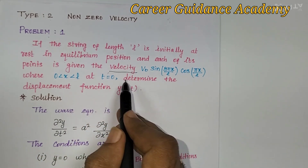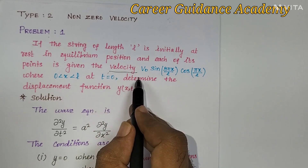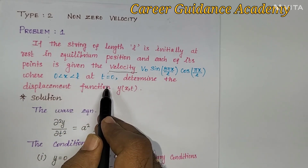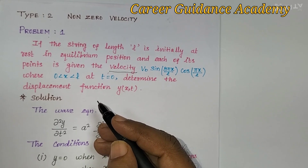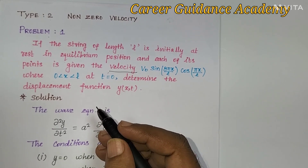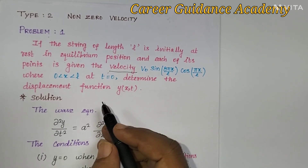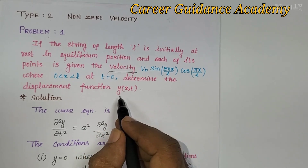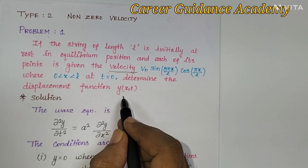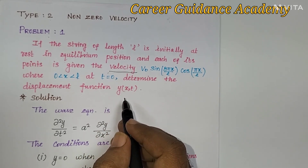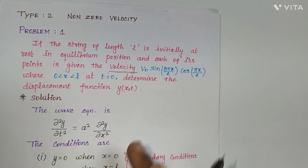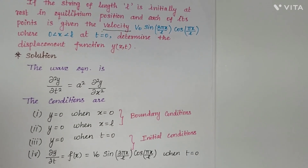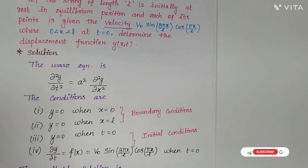In this problem, they have given velocity at a position along length 0 to L at time t = 0. We have to find the displacement function y(x, t). This is under the non-zero velocity model, and in this non-zero velocity model, we are going to solve one problem.